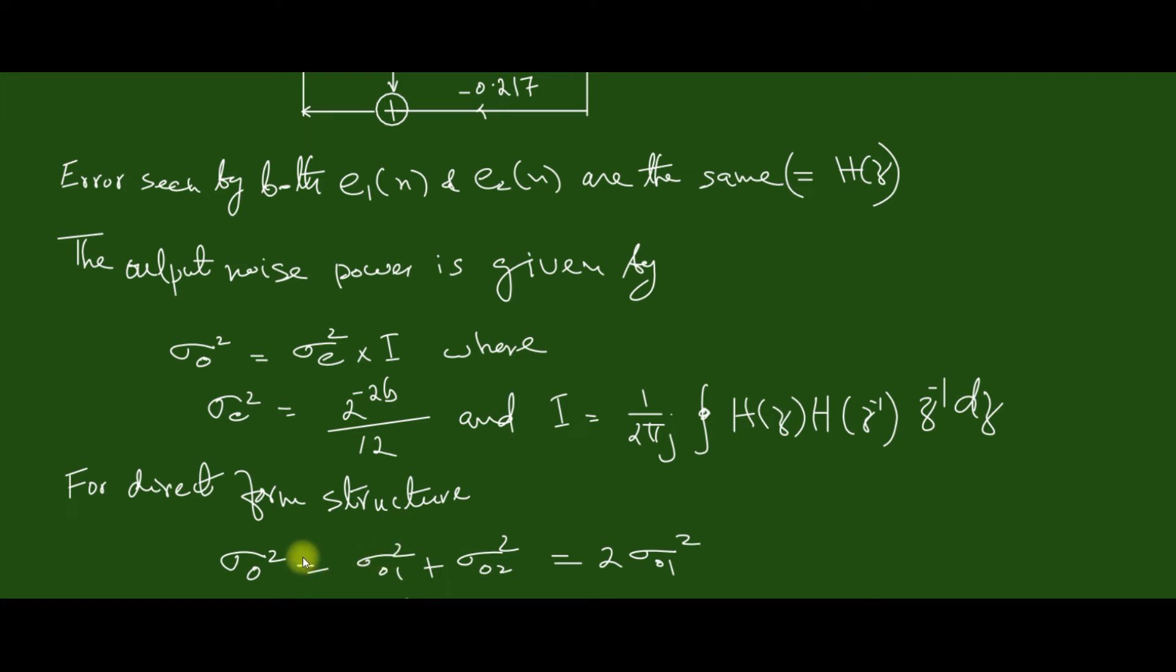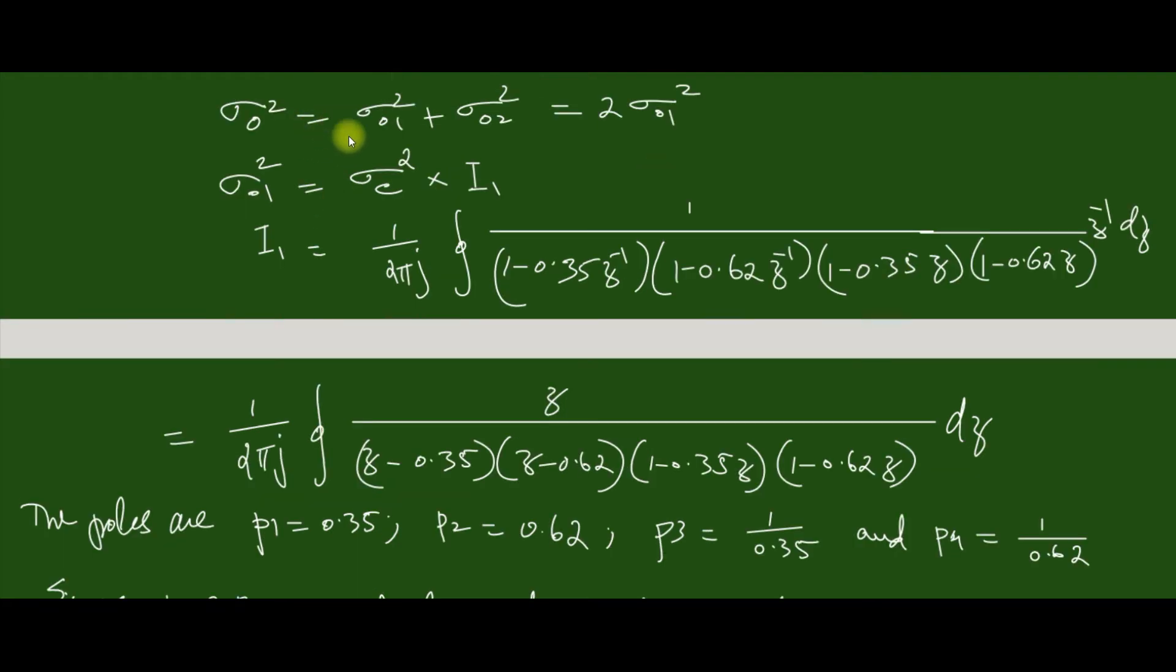Then for direct form structure, sigma node square equal to sigma node 1 square plus node 2 square, which is equal to 2 into sigma node 1 square, because sigma node 1 and node 2 are equal.